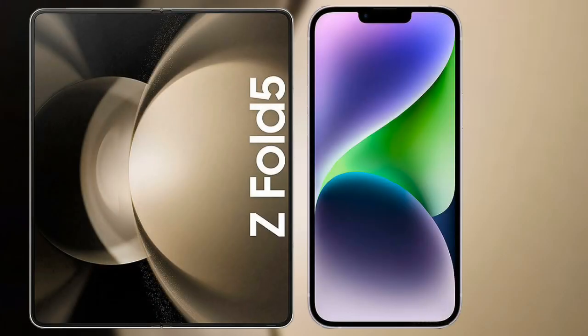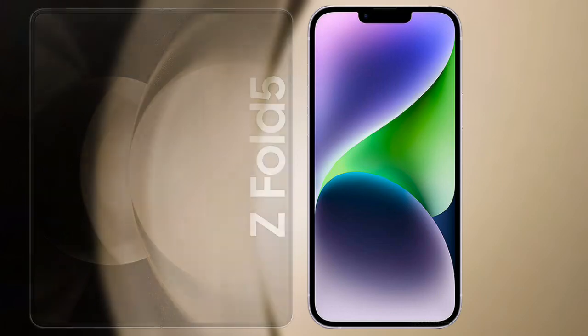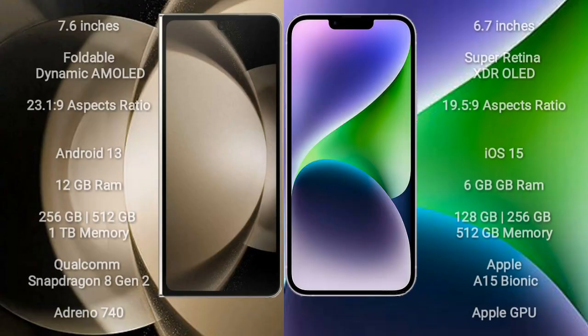I will compare the new Samsung Galaxy Z Fold 5 with iPhone 14 Plus. Samsung Galaxy Z Fold 5 comes with a 7.6 inches foldable dynamic AMOLED display and aspect ratio 23.1:9. iPhone 14 Plus comes with a 6.7 inches Super Retina XDR OLED display and aspect ratio 19.5:9.